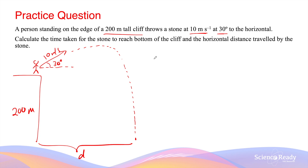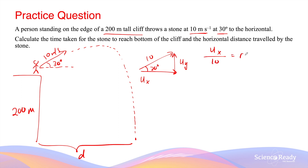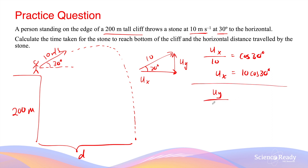We're given that the cliff is 200 meters tall, and we want to find the horizontal distance d. We start by finding the initial horizontal and vertical velocities by constructing a vector diagram. From the diagram, the horizontal velocity ux = 10·cos30° and the initial vertical velocity uy = 10·sin30°.